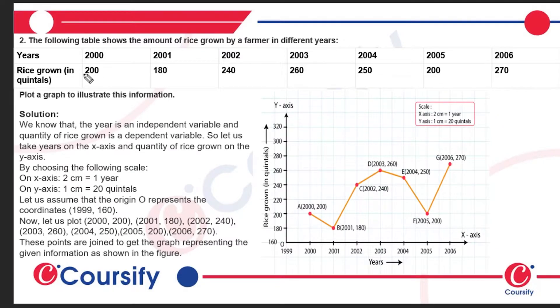Rice grown is the dependent variable. So year is taken on the X-axis and rice grown is taken on the Y-axis. The question also gives us the scale.